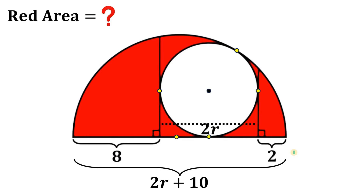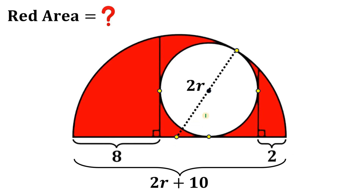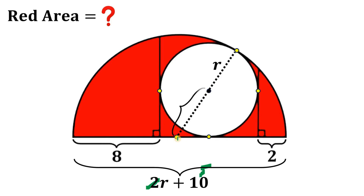Now for the radius of the semicircle — let's draw the radius of the semicircle. By the way, the center of the semicircle, the center of the circle, and the point of tangency are all collinear; this is not hard to prove. The radius of the circle is r. The radius of the semicircle is just half the diameter. We know the diameter is 2r plus 10, so the radius is r plus 5. Therefore, the length of the segment from the center to this point is just r plus 5.